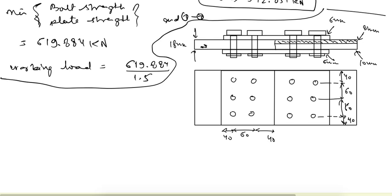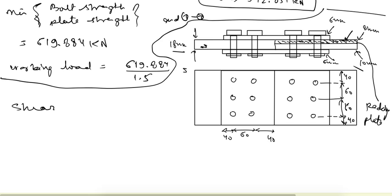In the next question, two plates of different sizes — 18 mm and 10 mm — are connected using a packing plate. The packing plate does not transfer any load; it is there only to make the connection possible. We will find the shear strength and bearing strength for this configuration.